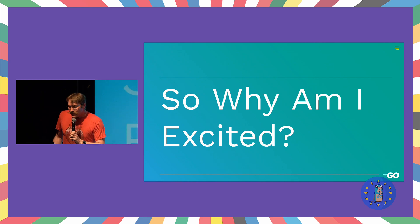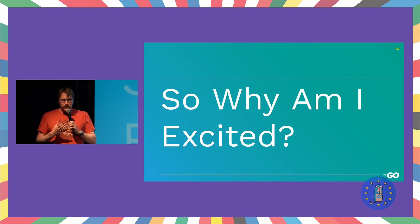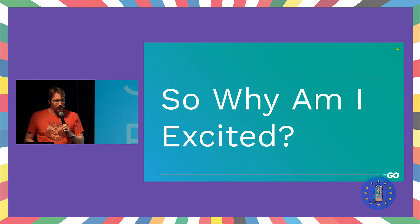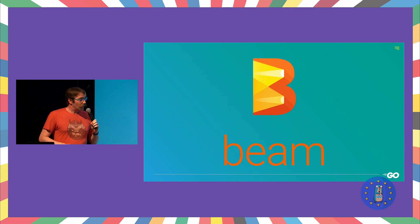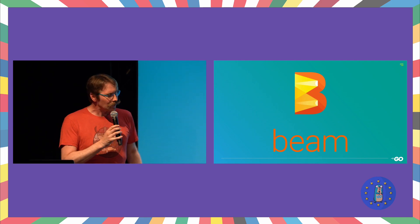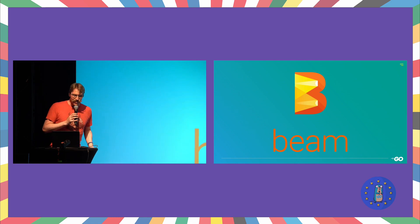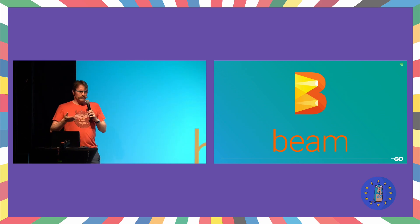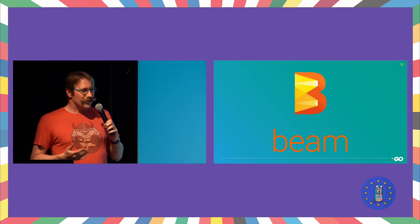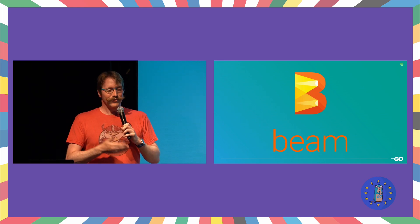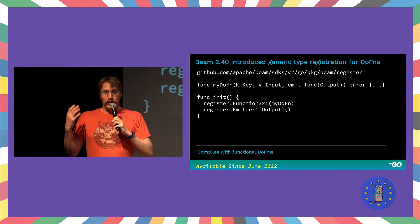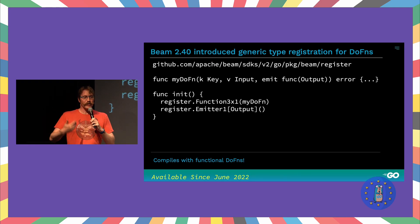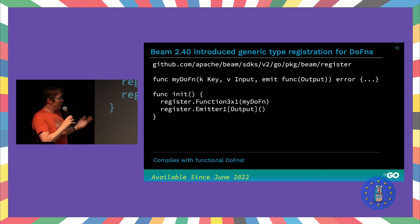So why am I excited? Because this combination of features is what was kind of missing from the first pass of generics. I understand the good reasons why they didn't want to add these right away. But what it means for me is that I work on the Apache Beam project, which I was here speaking about last year. Around the 2.40 release, which came out last year, we added a package that uses generics to register our dofns. Apache Beam is a model for unified batch and stream processing, and it largely uses a concept we call dofns to connect functions and pipelines to process your data. We need to understand what all your dofns are and register them with the framework ahead of time, so we added a generics package to do that.